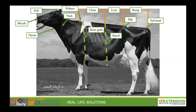Next is the tail head, or where the tail comes out of the main body of the cow. The other part of the tail we will identify is the switch. Think of the switch kind of like the hair on your head. The switch grows out of the end of the tail and is much longer than the rest of the hair on a cow. This switch has been washed and brushed to appear full and fluffy.